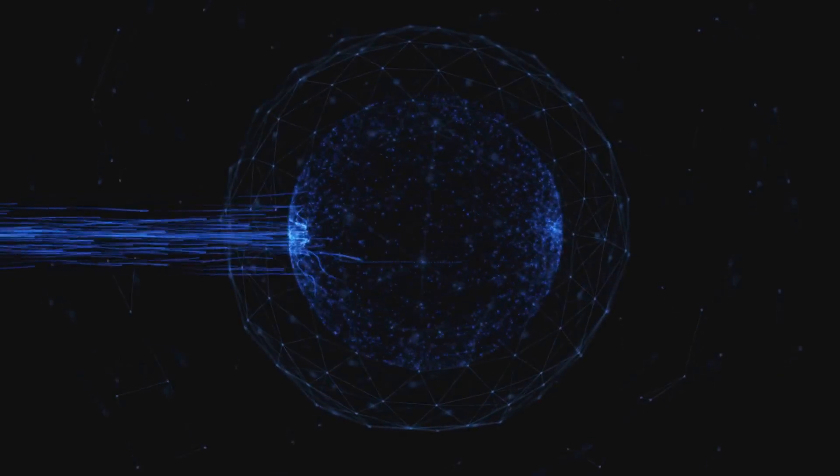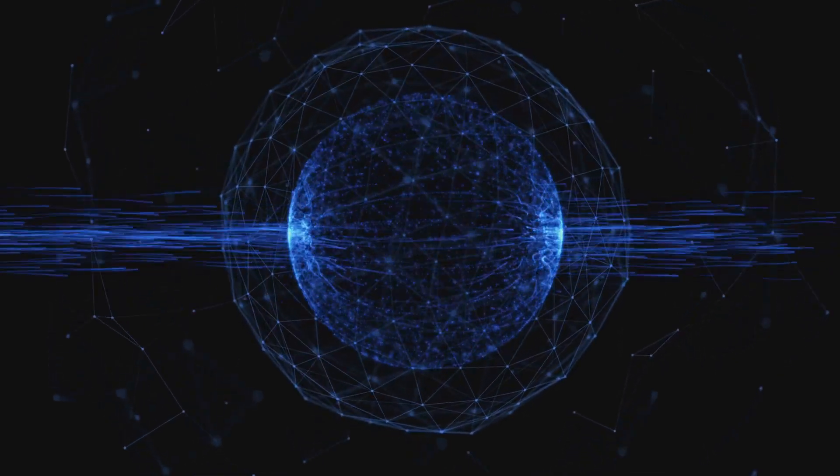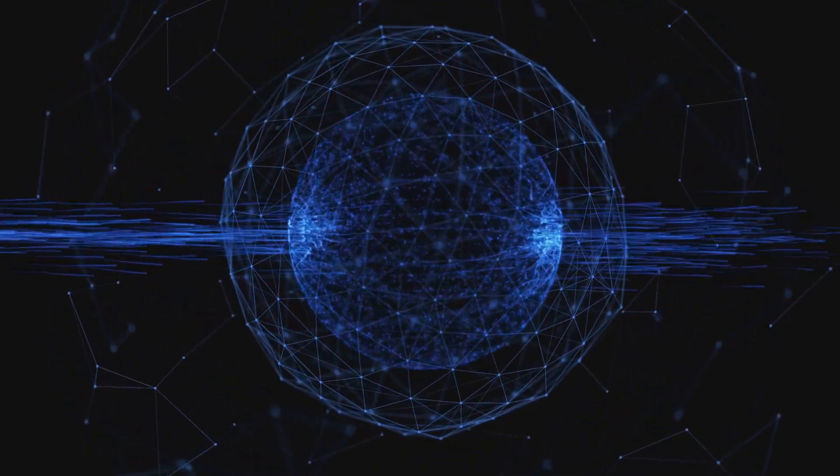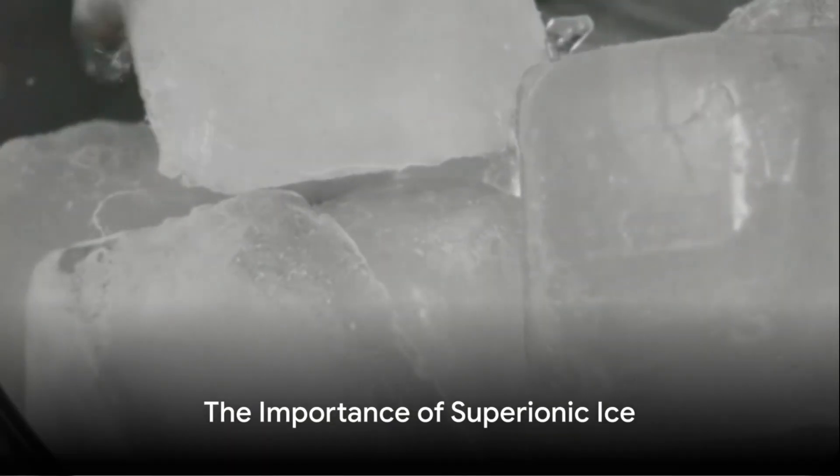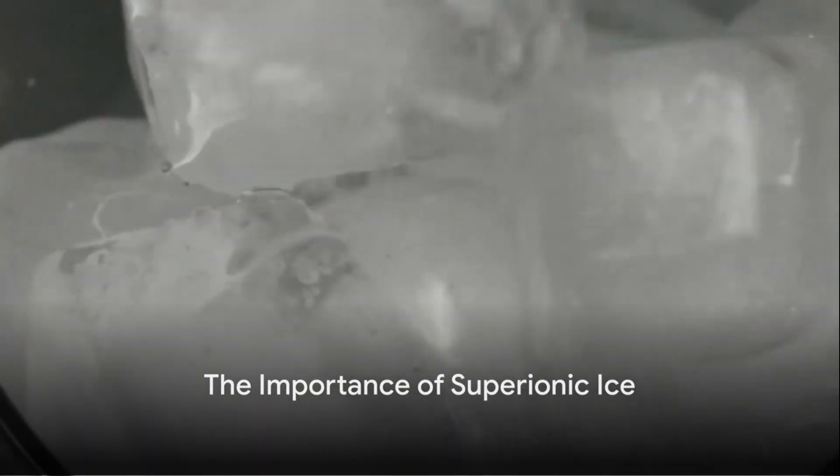This intricate form of ice, Ice-19 could potentially explain the unusual magnetic fields observed in Uranus and Neptune. Why should we care about superionic ice, you might ask?